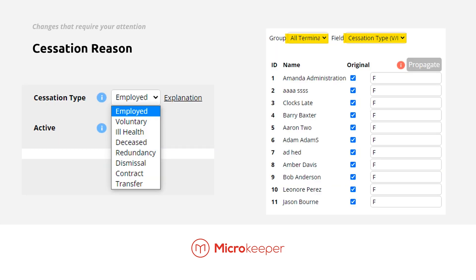A new field that is going to trip up pretty much every employer is the new cessation type, which is basically the employee termination reason. This new mandatory field will be required for all terminated staff going forward. For smaller accounts, this will just be a matter of updating one or two users. But for larger accounts with hundreds of staff, we've also included this field in the propagate data page — you can select all terminated staff, cessation type, and then update the code accordingly.